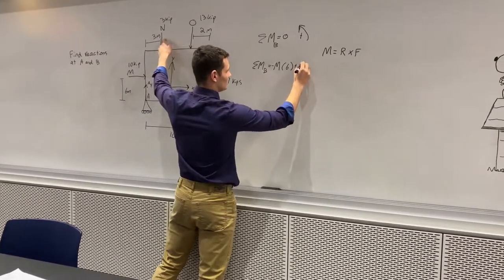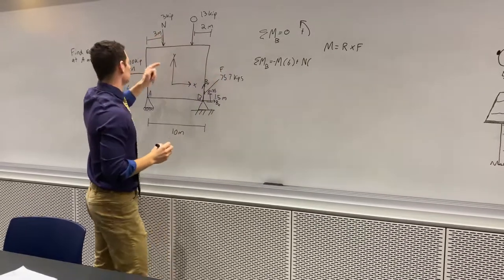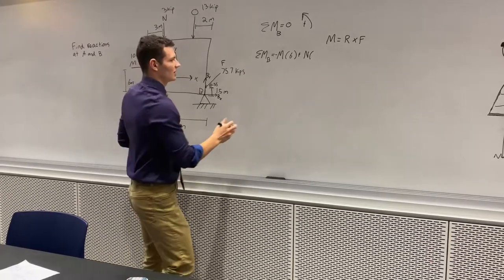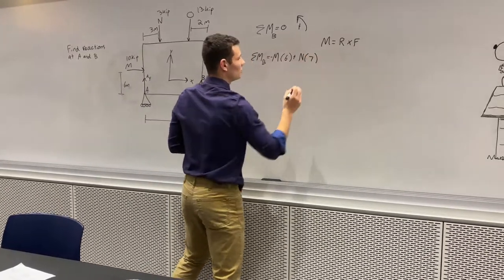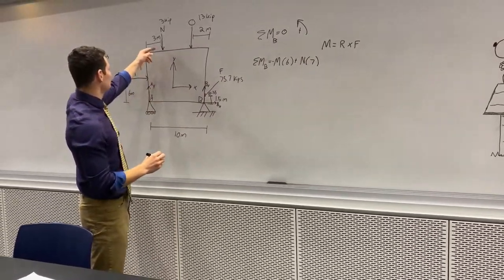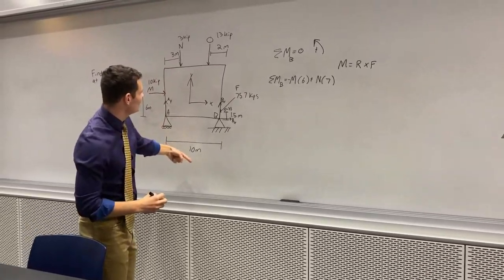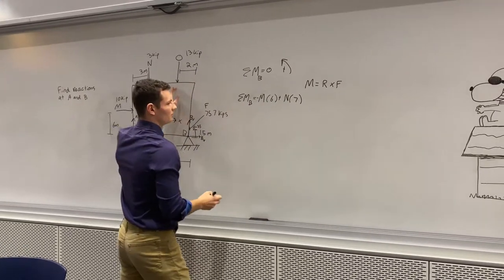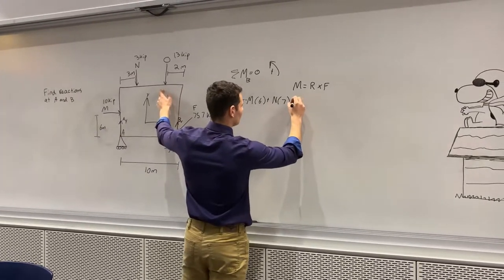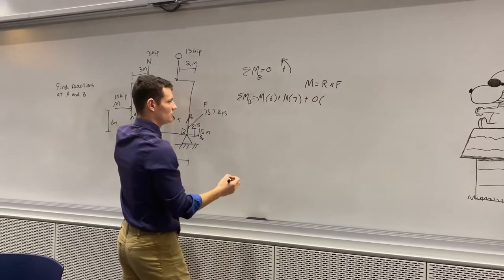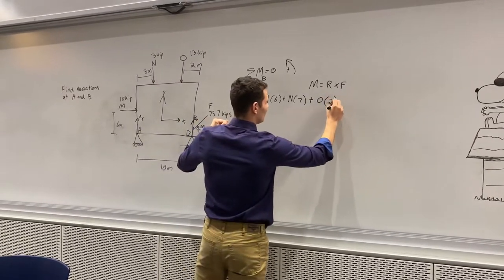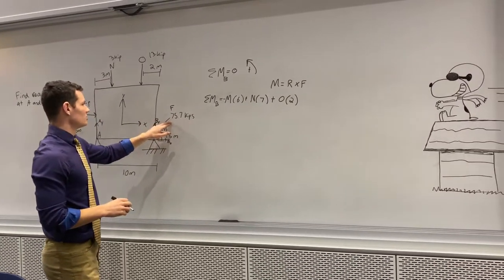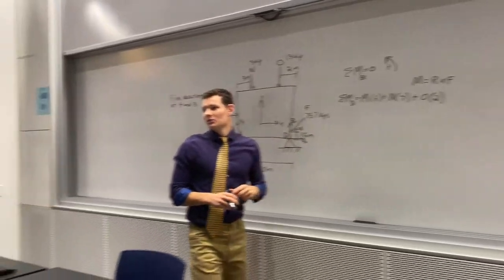Then force O times a distance of 2 meters — again pushing counterclockwise, so positive. Now for force F, Riley, how would we do this?